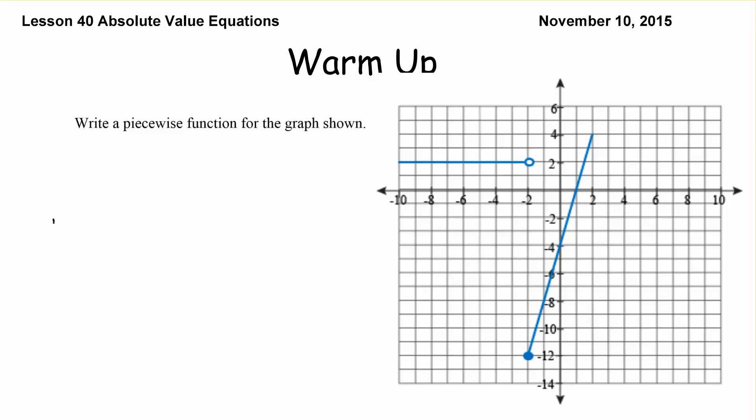So we've got piecewise where f of x equals and we look at our constraint. Let's call this one our blue line. So our constraint is x values that are less than negative 2. So x values that are less than negative 2 is our constraint.